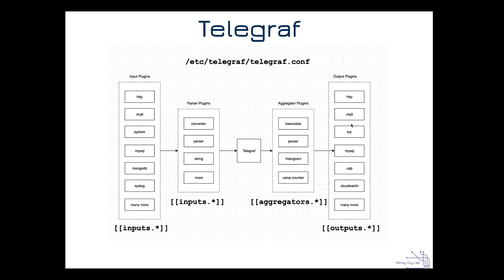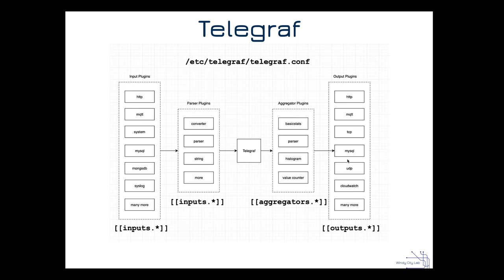In the config file you'll see headers like 'inputs.mqtt_consumer.' That's where you put the information for how you want Telegraf to pull information from that particular source. In this example, the server hosting the broker is localhost on port 1883. We set quality of service, a connection timeout, and our topic is 'WCLTalksTech/ArgonDisplay.' This could have been whatever we wanted — it's completely arbitrary.